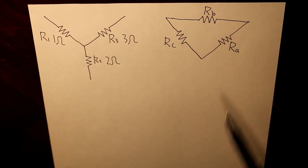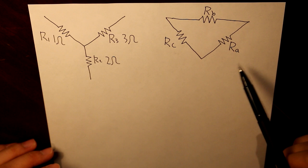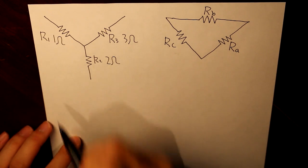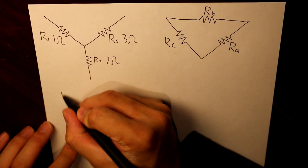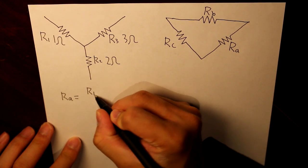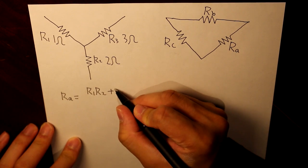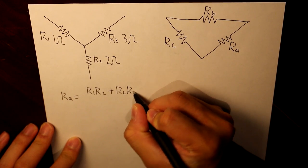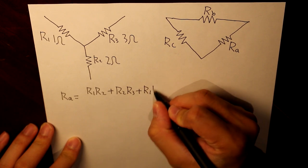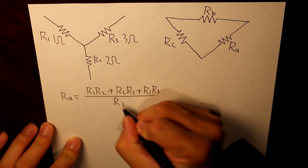Let's write down all the equations to determine our equivalent delta values. RA is going to be equal to R1 times R2 plus R2 times R3 plus R1 times R3, all divided by R1.